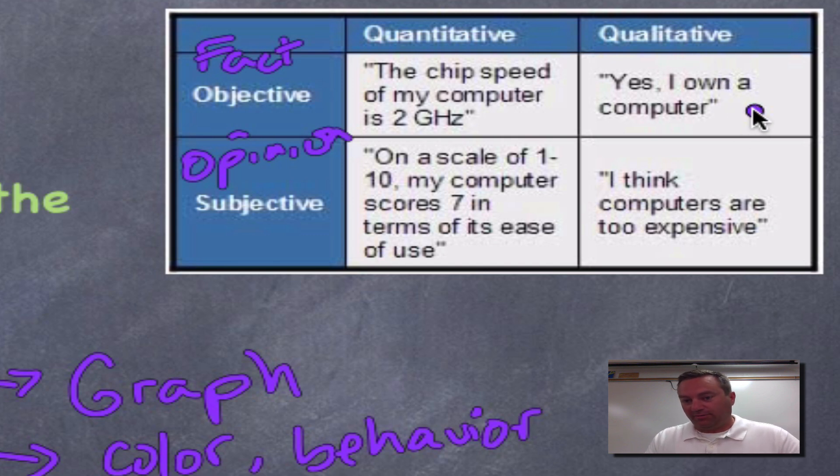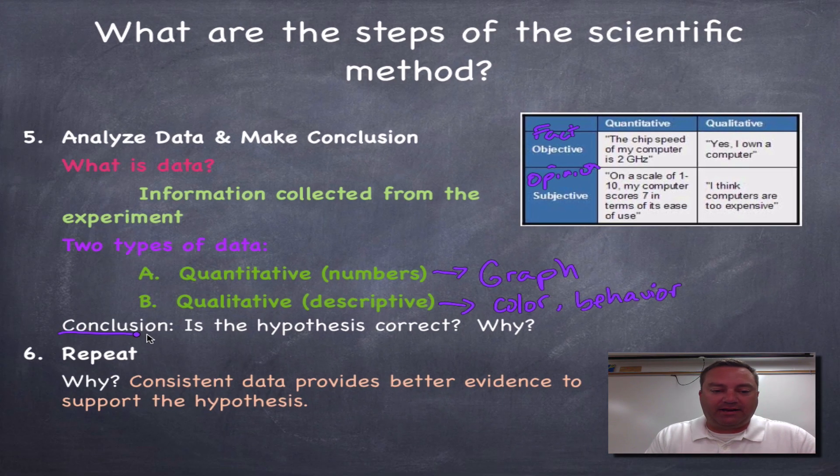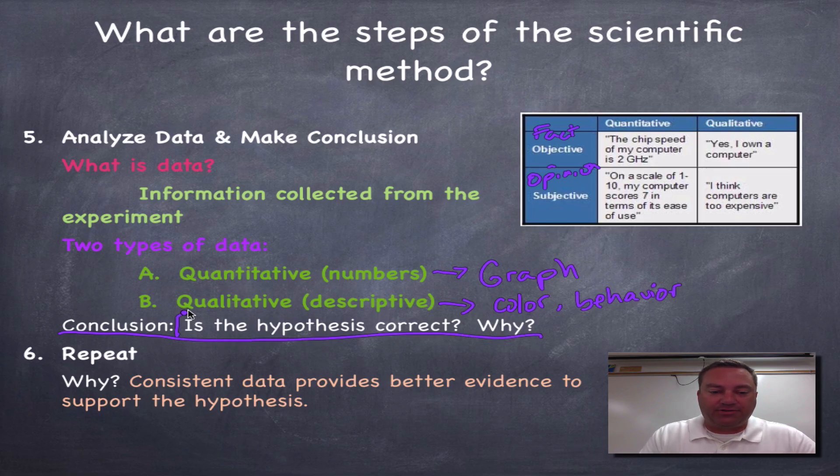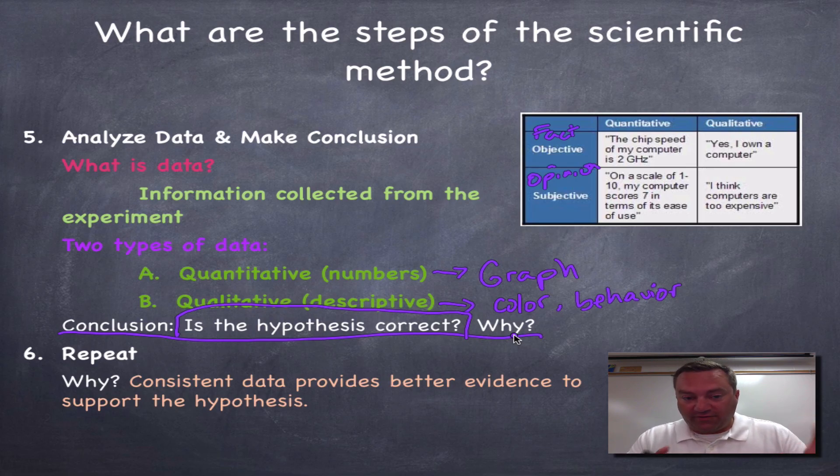Now, qualitative. Yes, I own a computer. That's a fact. That's true. You got a receipt. It's yours. Subjective. I think computers are too expensive. I'm a Mac user. They're too expensive. I would consider that a fact, but it's really subjective. Now, we've collected all of this data. What are we going to use it for? The collection of data is used for the conclusion. Is my hypothesis correct? If it is, the data should support why it is. If it's not correct, the data is telling you, hey, your hypothesis is not correct. Now, if your hypothesis is not correct, that's okay. We can go back, tweak our experiment, and figure out why our hypothesis went wrong. We can always change our hypothesis to fit the data. That is good science.